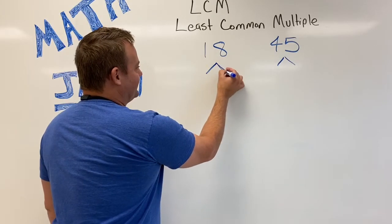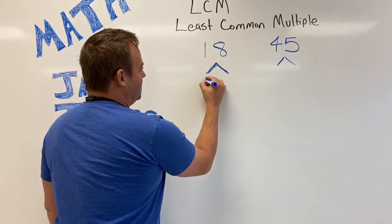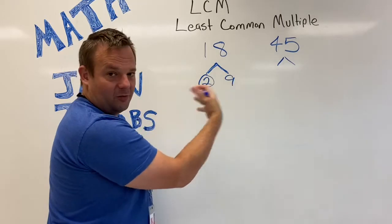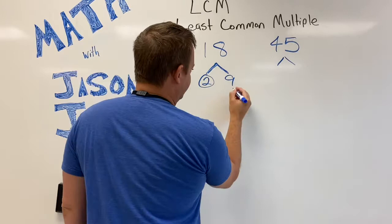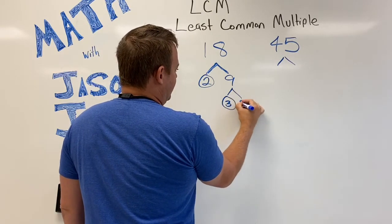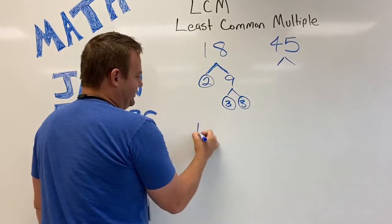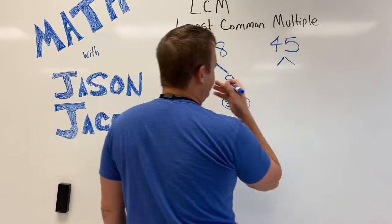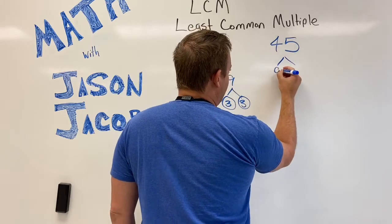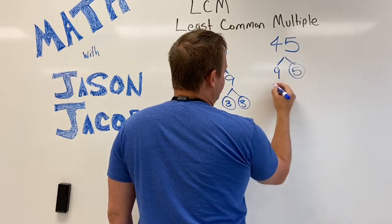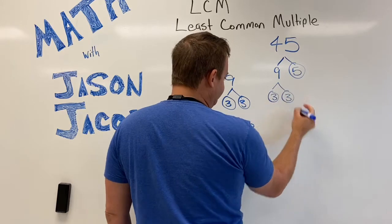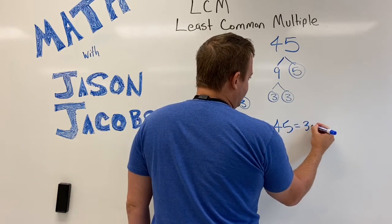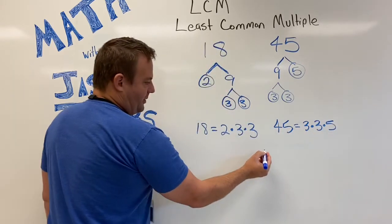18 factors out into 2 and 9. Now you could also do like 3 and 6. Any way you do it you'll end up with the same prime factors. So we have the prime factorization of 18, which is 2 times 3 times 3. And 45 factors out into 9 and 5. 5 is prime, and then 3 times 3. So 45 is 3 times 3 times 5.